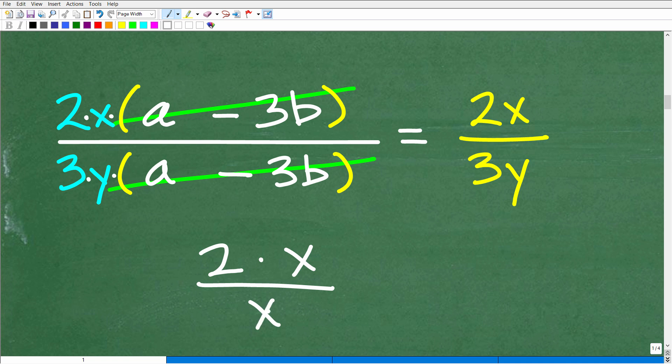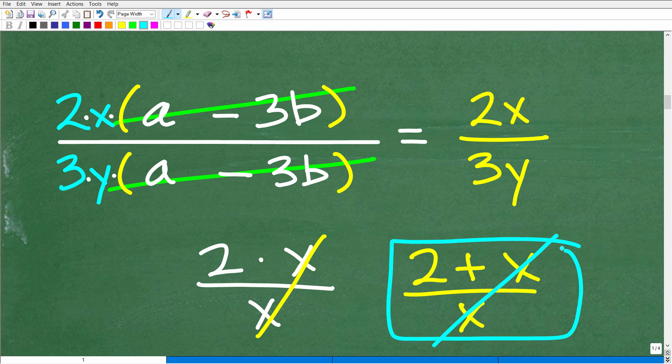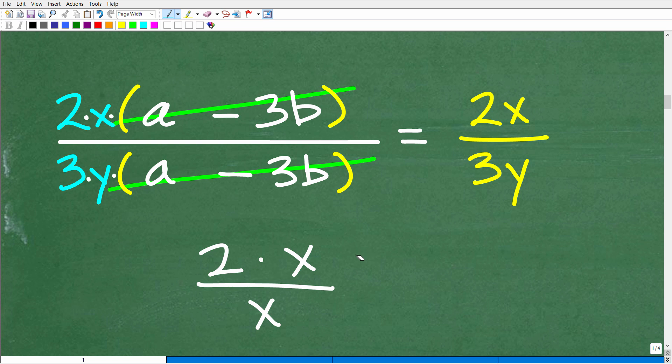Here, these are common factors. I can cross-cancel. No problem there. What if I had 2 plus x over x? Now, this is not here. These are not factors. This is a sum. But it's so tempting to just want to cross-cancel this x. And this is absolutely incorrect. So be careful with that. It's a very, very common mistake in mathematics and algebra.